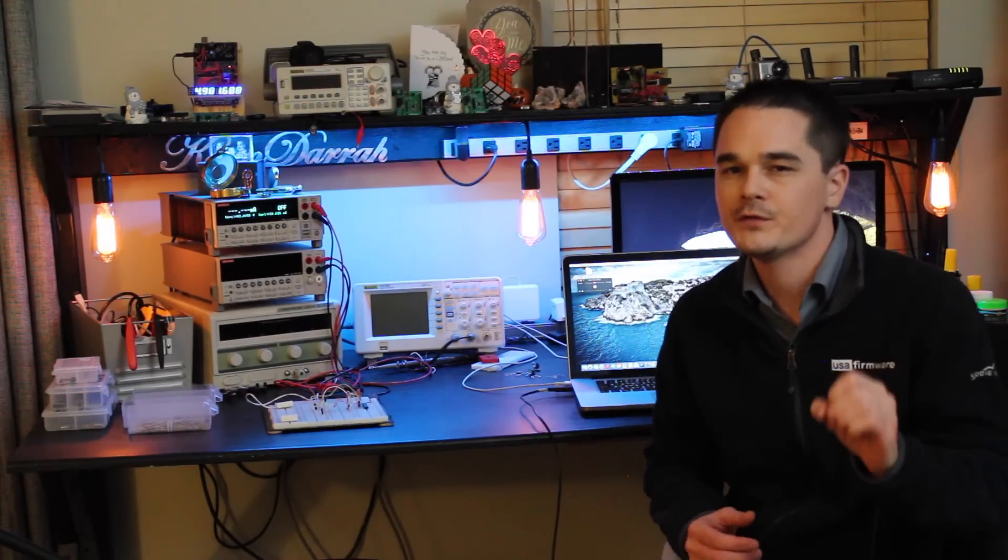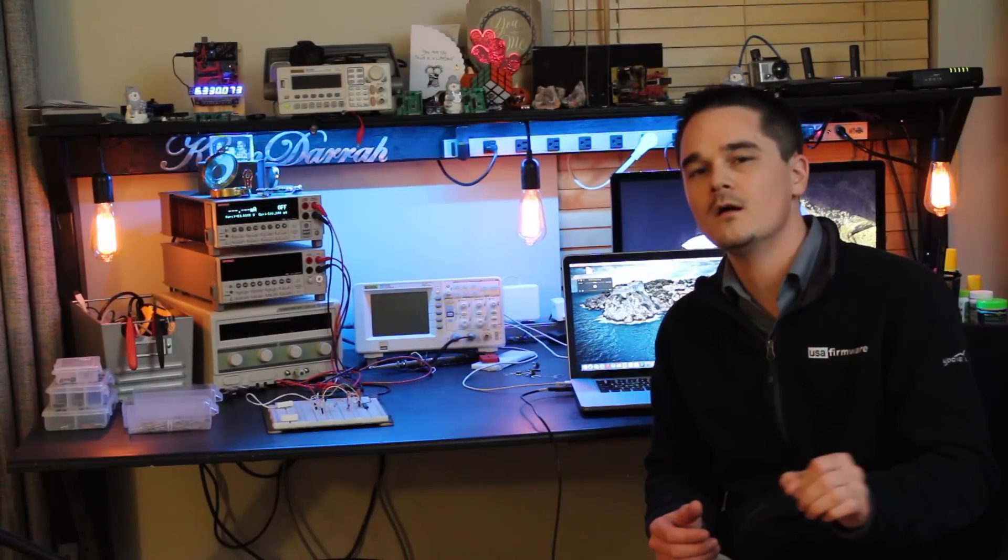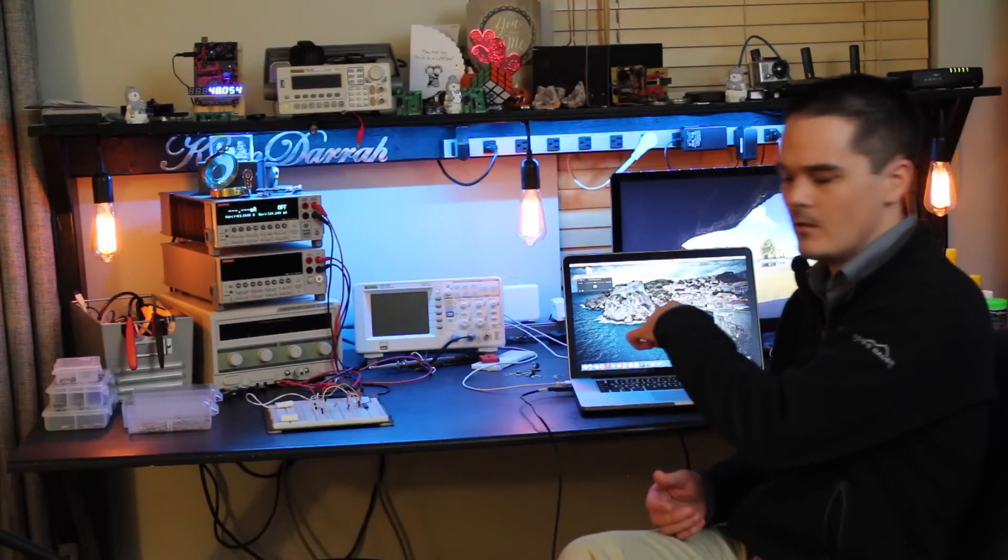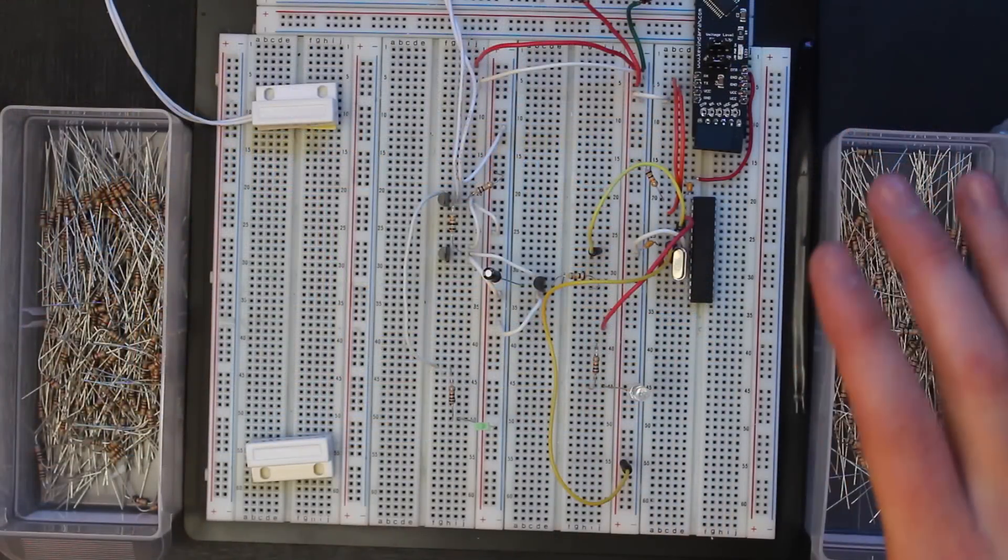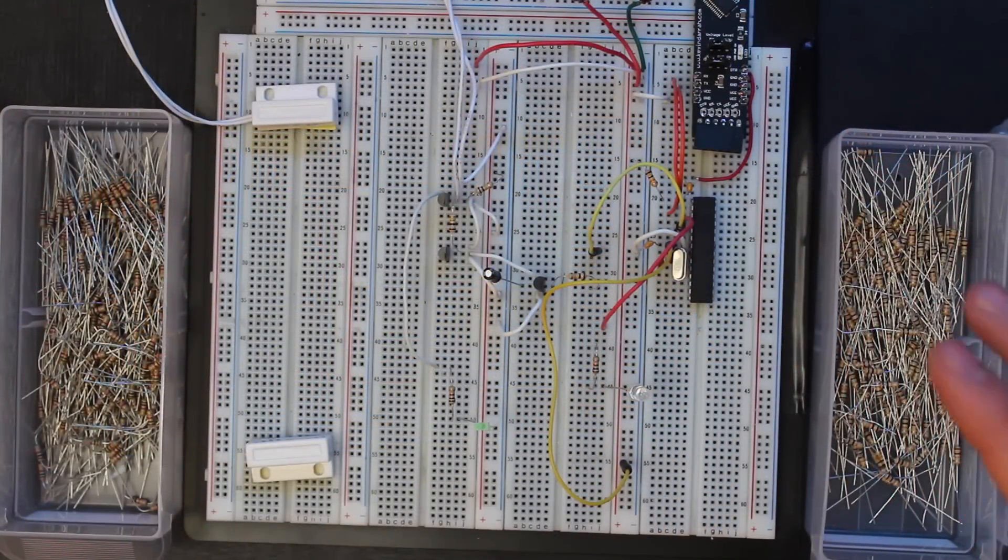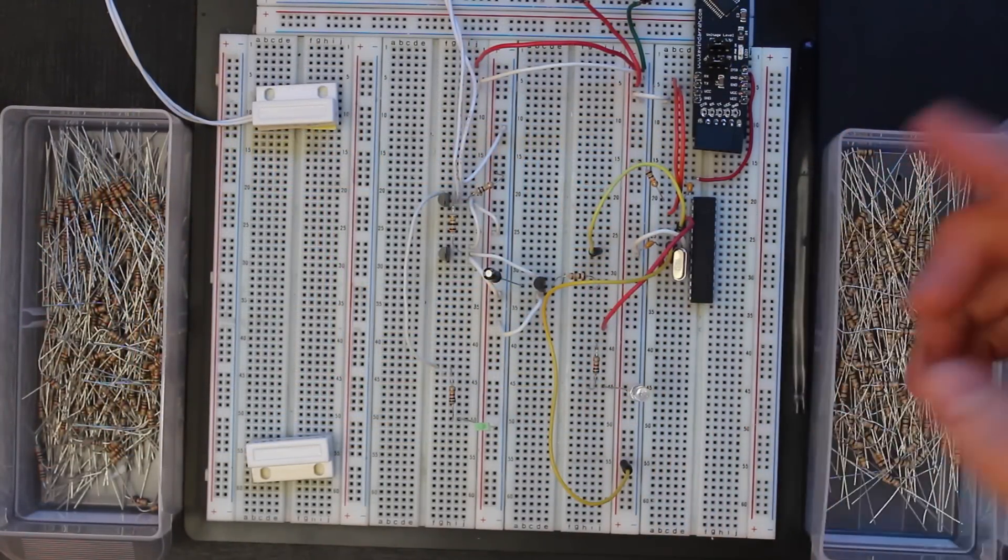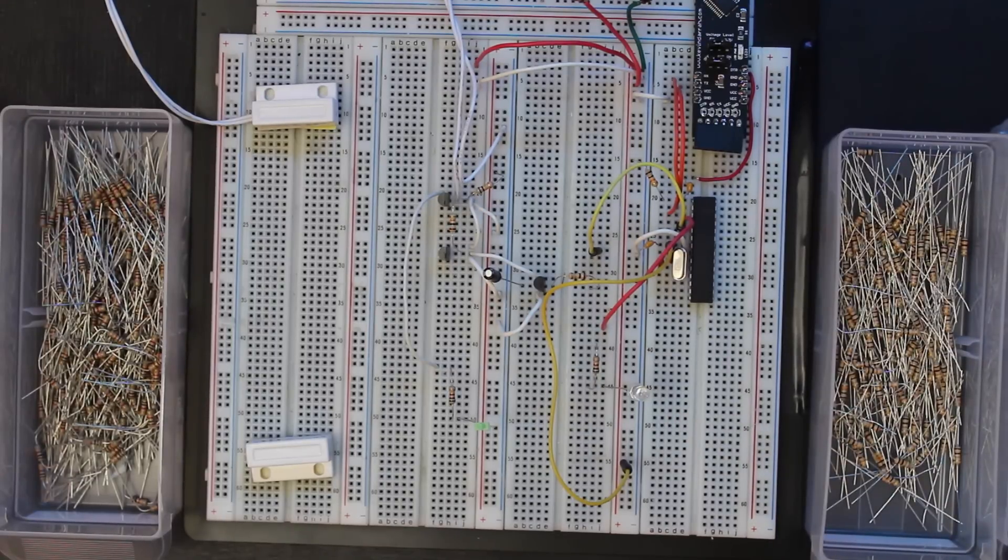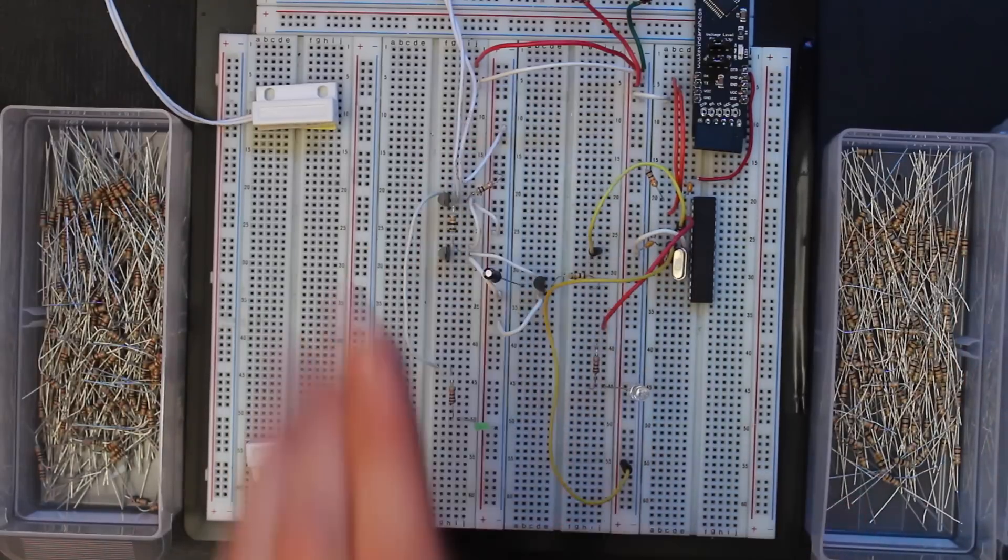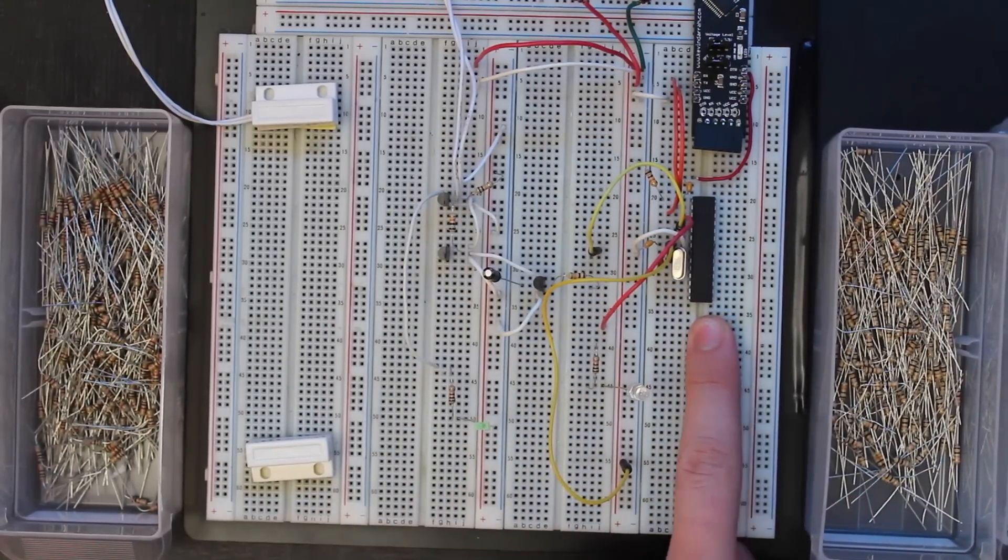I want to show you a very simple circuit that allows the Arduino to kill power to itself. Let's take a closer look. Some of this might look familiar—that's because this is the same circuit from my last video on the latch circuit. I'll put a link in the description. What we have here is the latch circuit and a standalone Arduino.